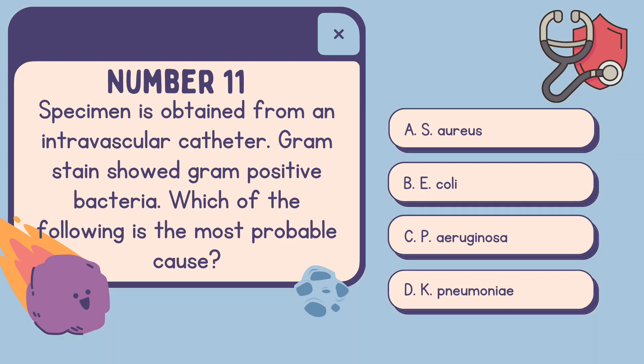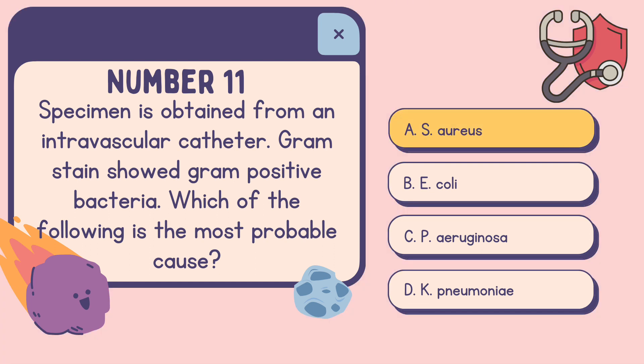Number eleven: Specimen is obtained from an intravascular catheter. Gram stain showed gram-positive bacteria. Which of the following is the most probable cause? A. S. aureus. B. E. coli. C. P. aeruginosa. D. K. pneumoniae. The correct answer is A. S. aureus.